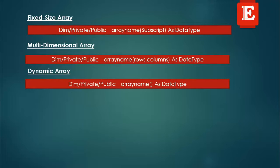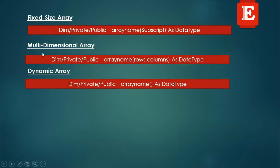The syntax forms are as follows: for a fixed-size Array, use Dim, Private, or Public, then the Array name and subscript as data type. For a multi-dimensional Array, use Dim, Private, or Public, then Array name with row and column as data type. For a dynamic Array, use Dim, Private, or Public, then Array name as data type.